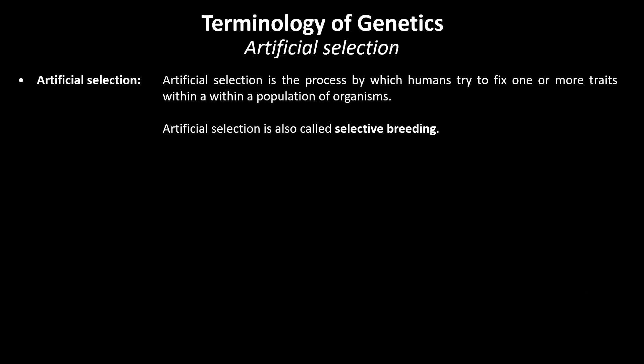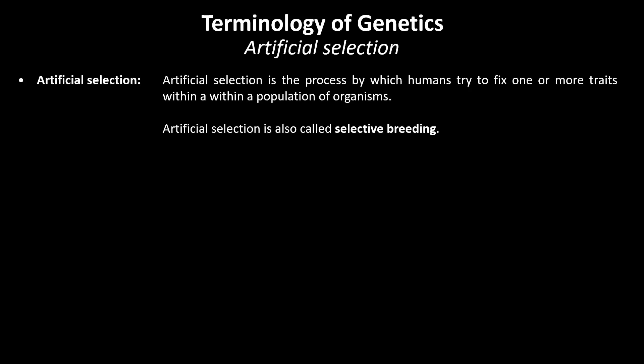When selection is aimed to fix one or more traits within a population by human interference, we speak of artificial selection or selective breeding. One can think of selection towards a certain behaviour in dogs, cows which produce more milk, but also the collar and tail type varieties we know today in our show bettas, and which to date are still expanding.